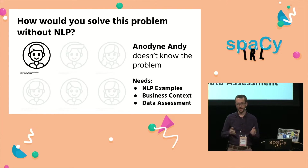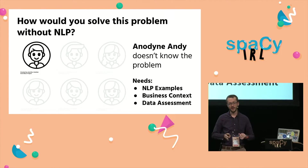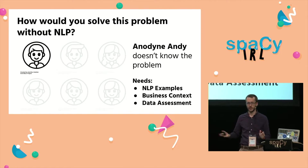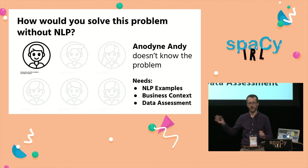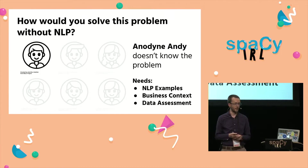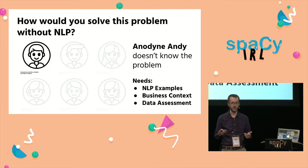The first is Anodyne Andy. Anodyne Andy doesn't even think about things in terms of problems and solutions. He just heard that you do something with text, and now he wants to talk to you to figure out what he can do. So what Anodyne Andy needs is examples of applied natural language processing projects — what it can and can't do, the types of tasks that are relevant.